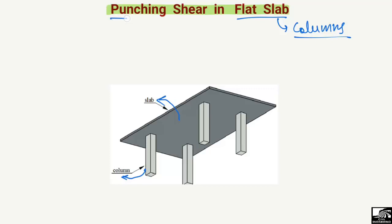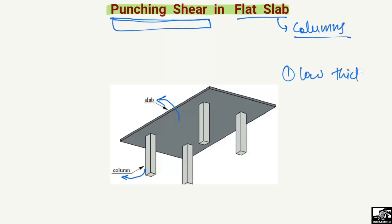Now, why do we have punching shear in the flat slab but not in other types of slabs? The main reason is because of the low thickness of the slab, and also because of the high load demand. Because there are no beams, only the columns are responsible to take the load.